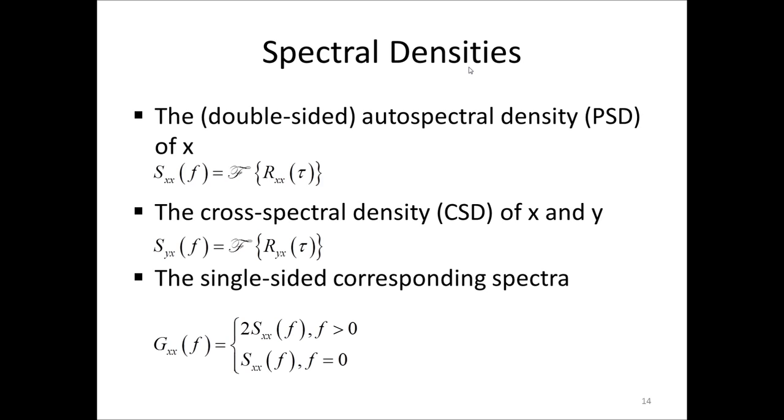In practice, we never use these double-sided spectra, however. We produce single-sided spectra simply by moving over the negative frequencies on the positive side. And this is done simply because of the symmetry, simply by multiplying the positive frequencies by two. Except, of course, for the DC frequency of zero, because this value only occurs once.